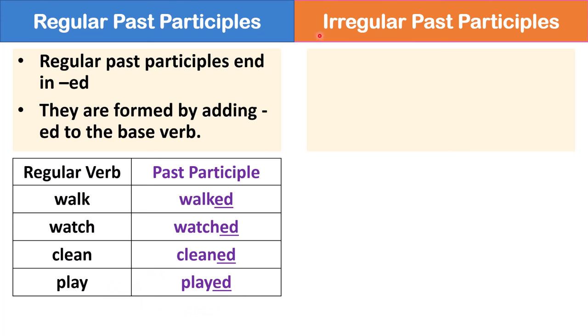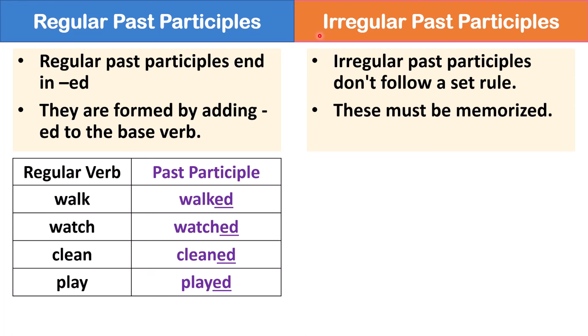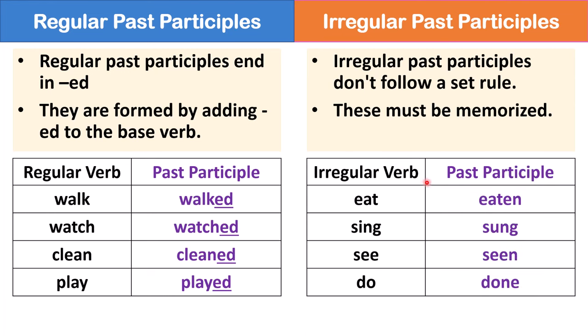But there are many irregular past participles. And irregular past participles don't follow a set rule, so you have to memorize these. If you go to the description below this video, I've linked you to some videos on irregular verbs to help you practice the irregular past participles. For example, the past participle of eat is eaten. The past participle of sing is sung. The past participle of see is seen. And the past participle of do is done. There are many more past participles. You just have to memorize them.